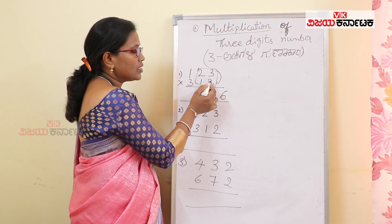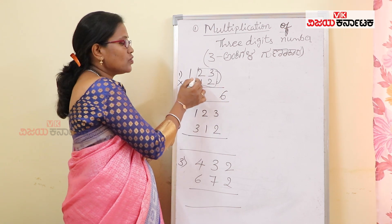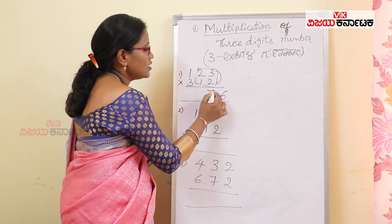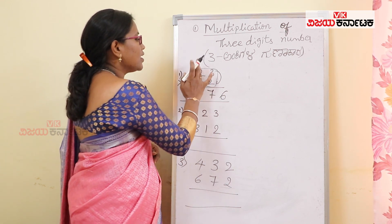4 plus 3-1-3. So 4 plus 3 is 7. Next, you will consider all 6 digits.